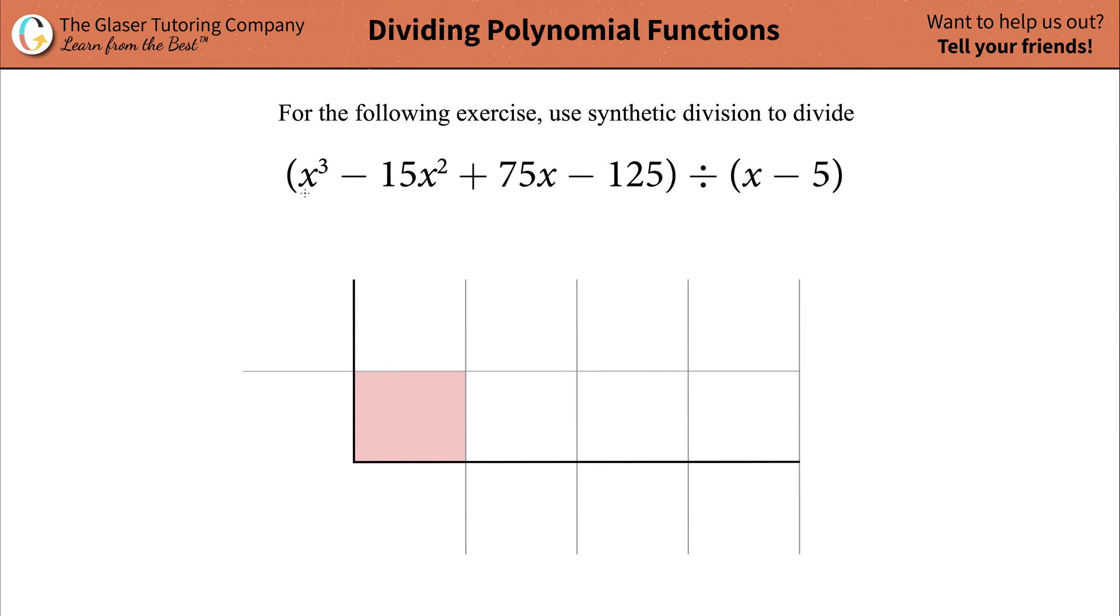Now, you want to make sure that you have decreasing x terms in your polynomial function. In other words, you have an x cubed, you have an x squared, you have an x, and then you have no x term. If one of them were missing, imagine this term were missing, you would have x cubed and then you jump to x, but you need an x squared term though. So what you would do is you would add into the equation zero x squared.